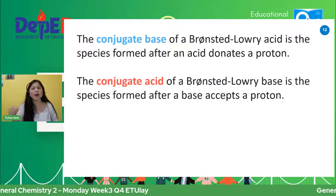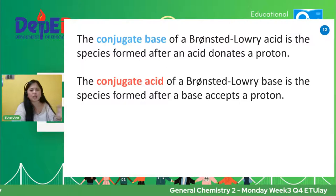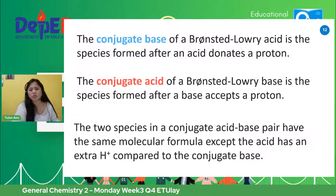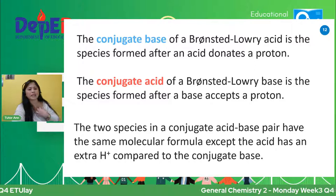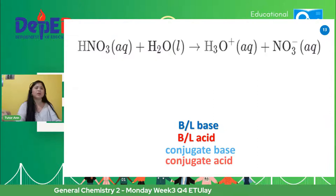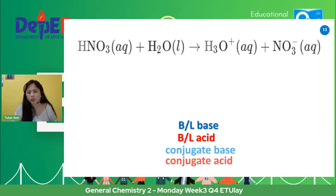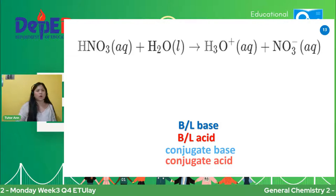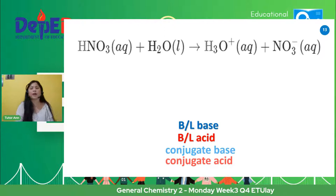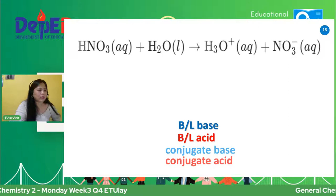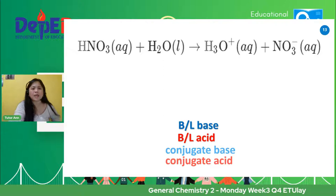The two species in a conjugate acid-base pair have the same molecular formula except the acid has an extra H positive compared to the conjugate base. For example, so we have aqueous nitric acid. Nitric acid reacts with water to form hydronium ion and nitrate in aqueous solution. So let us identify ang ating Bronsted-Lowry acid. Pag Bronsted-Lowry acid, nag-donate ng proton. Alin kaya sa dalawang reactant na ito ang mag-donate?